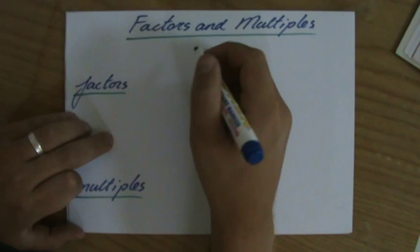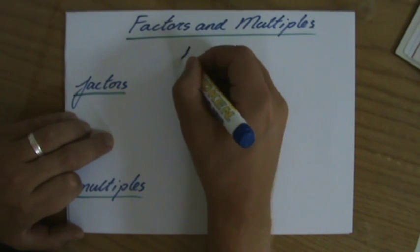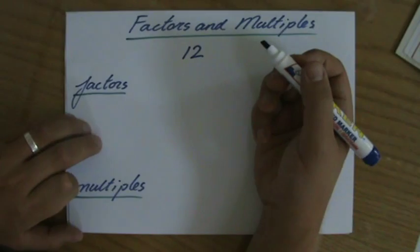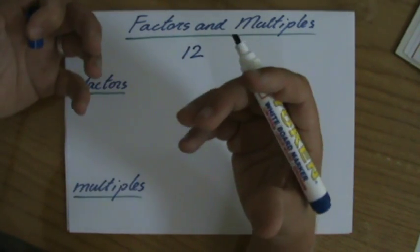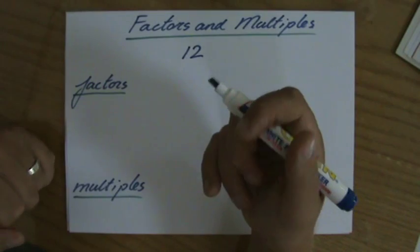Now if you look for instance at the number 12, and we are asked to give all the factors of 12. Well a factor is, or are those numbers, if you multiply them, the answer is 12 in this particular case.